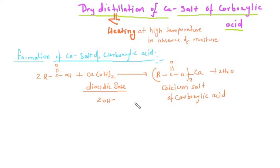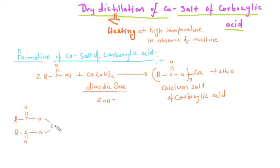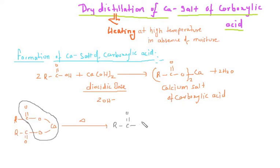Now we will do the dry distillation of calcium salt of carboxylic acid. The trick is simple — take the structure (RCOO)₂Ca, heat it, and we get removal of CaCO₃. So the product is R–C(=O)–R, which is nothing but a ketone. The specific product depends on which compound we are heating.